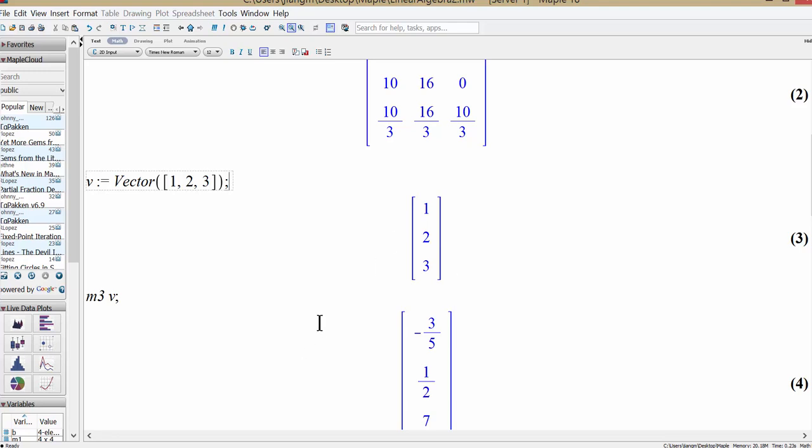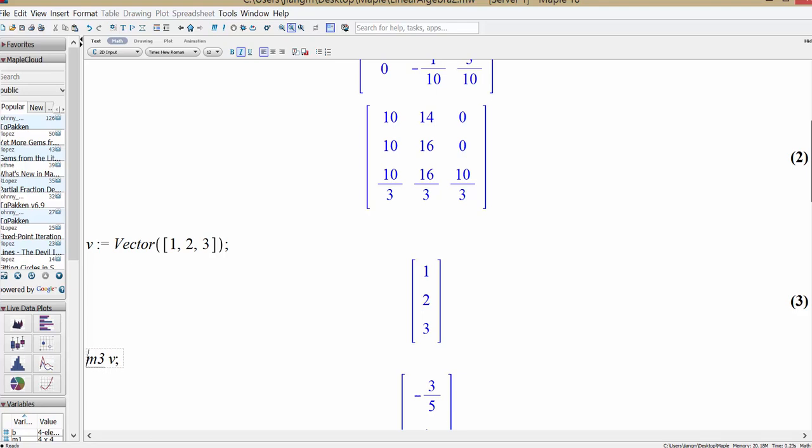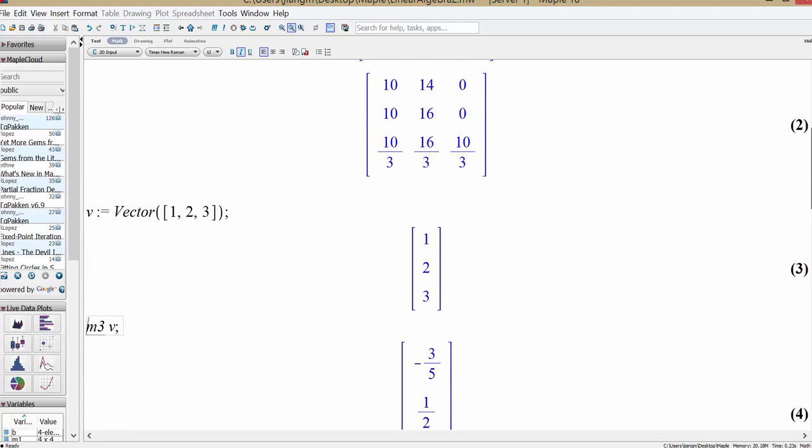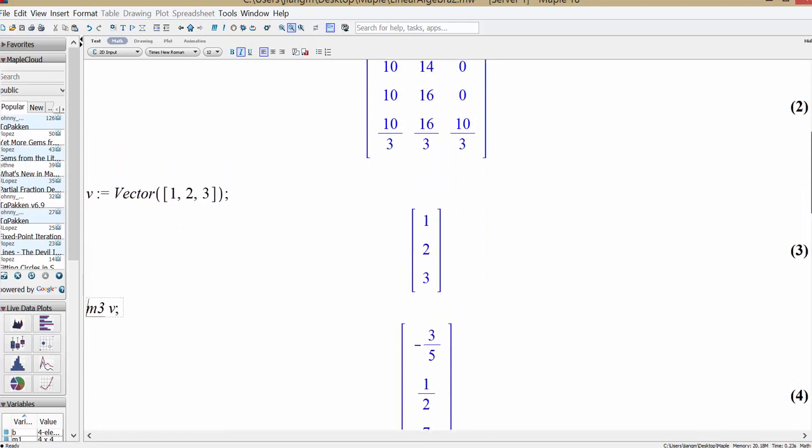1, 2, 3. And you enter. And that's 1, 2, 3. And now you can do multiplication as well. m3 times v is matrix multiplication. And that's what you have.